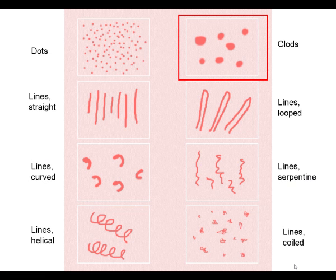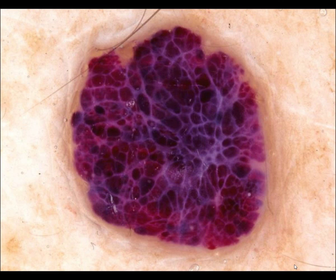What about clods? This is also a common vascular pattern. In angioma, for example, we have a pattern of clods.